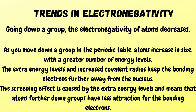When you go down a group, the electronegativity of atoms decreases. This is because atoms increase in size with a greater number of energy shells. The extra energy levels and increased covalent radius keep the bonding electrons further away from the nucleus. The screening effect caused by the extra energy levels means that atoms further down groups have less attraction for the bonding electrons.